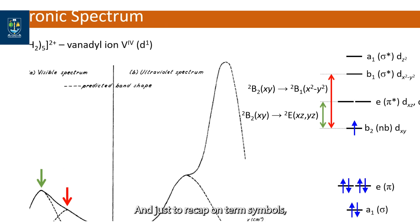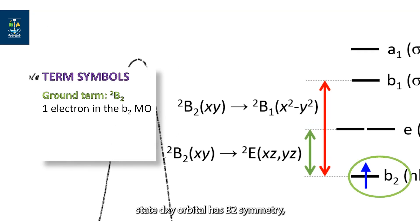And just to recap on term symbols, the ground state dxy orbital has B2 symmetry so its term symbol is a capitalized B and the spin multiplicity in this case two is written as superscript in front of the B. This is the ground term. Spin multiplicity is given by the formula 2s plus 1 where s equals one half with one unpaired electron in this orbital.